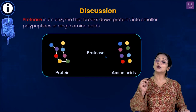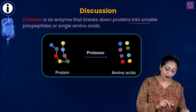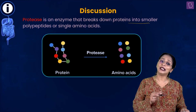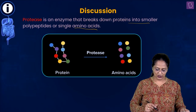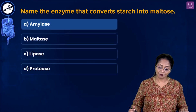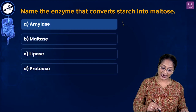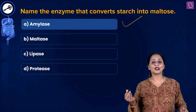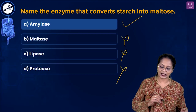Proteases are enzymes which act upon proteins; they break down proteins into polypeptides and finally into simple amino acids. So for this question — the enzyme that converts starch into maltose — the answer is A: amylase. You have salivary amylase or amylase from pancreatic juice. A is the right answer; B, C, and D can be eliminated.